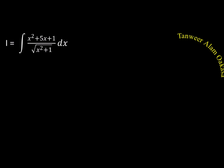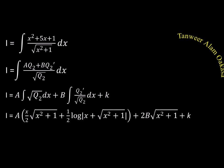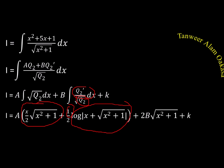Since C = 0, the integral of (x² + 5x + 1)/√(x² + 1) becomes A·√Q2 + B·Q2'/√Q2. The first term gives x/2·√(x²+1) + (1/2)·log(x + √(x²+1)), using the standard square root of quadratic formula. The second term, I2, gives 2B·√(x²+1) = 5·√(x²+1). So whenever we have Q1/√Q2, we write A·Q2 + B·Q2' + C and simplify.